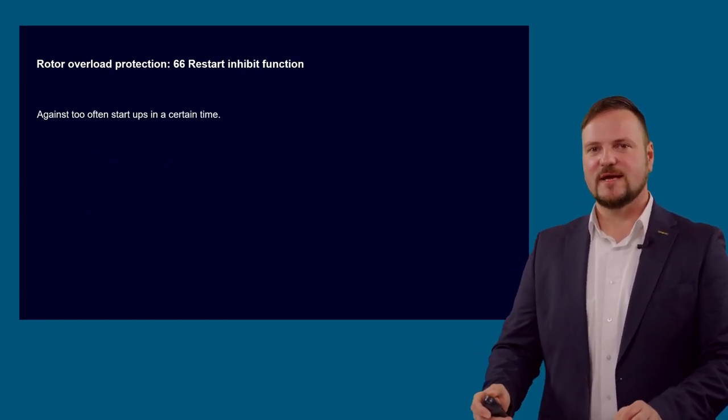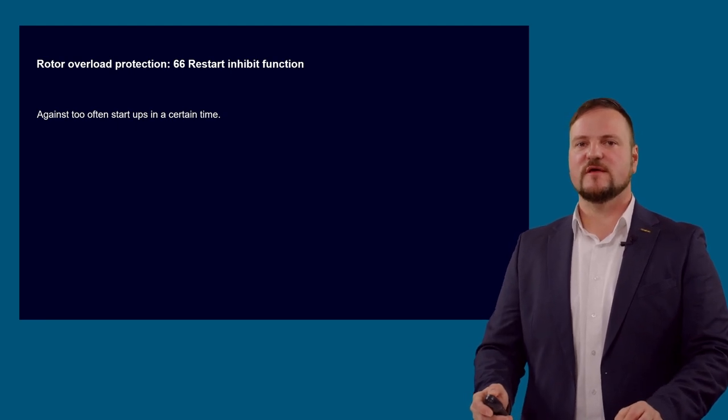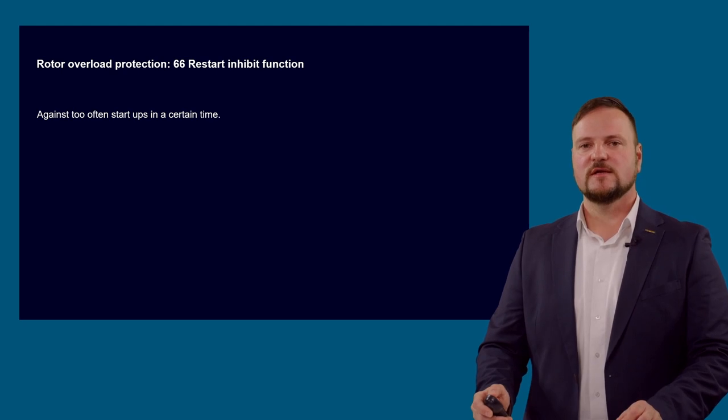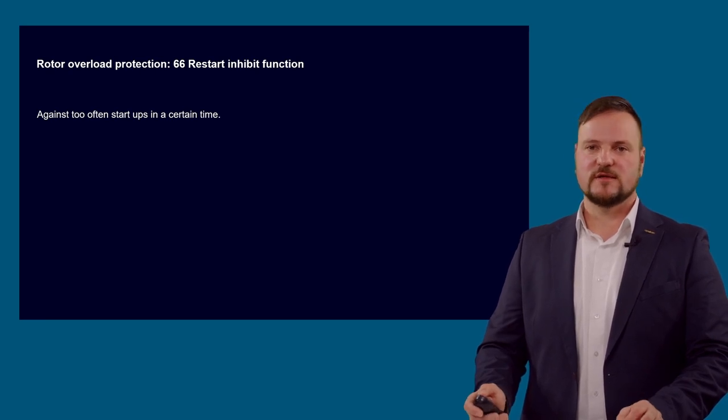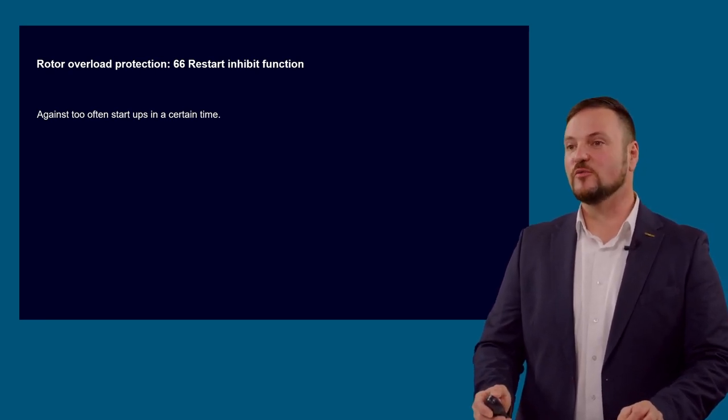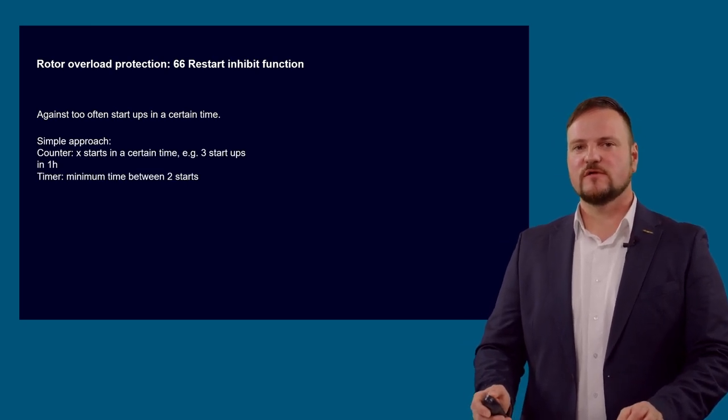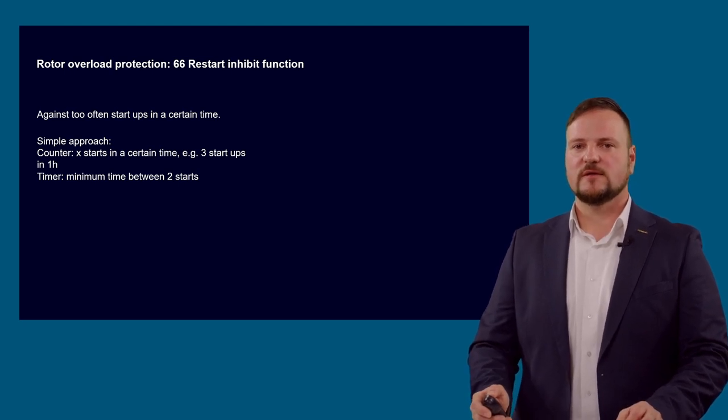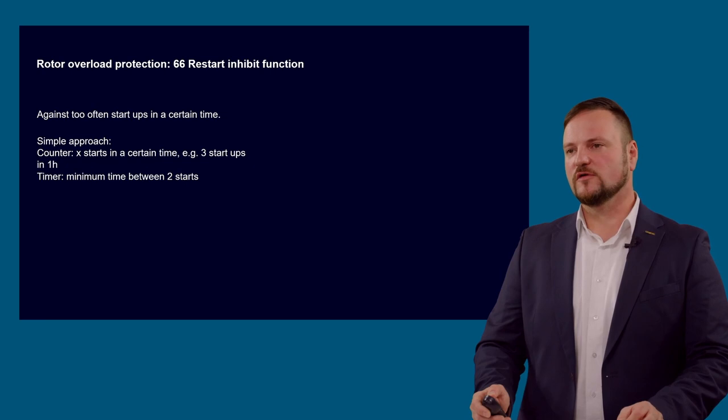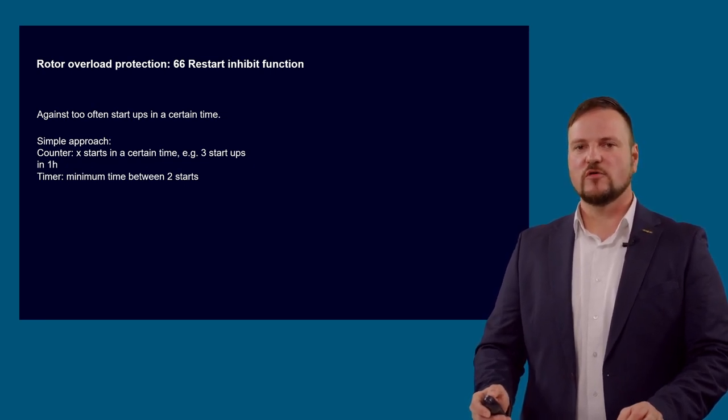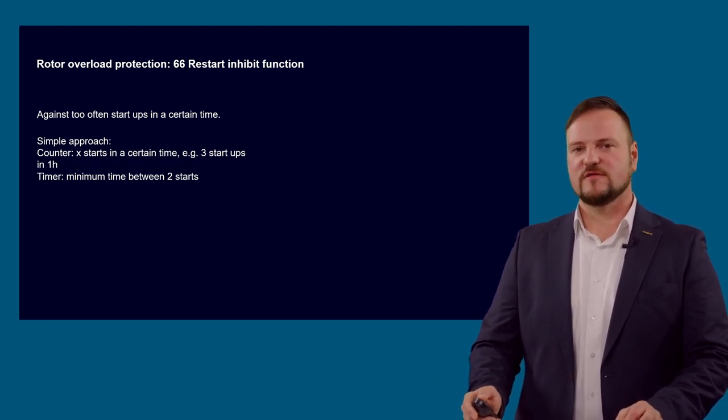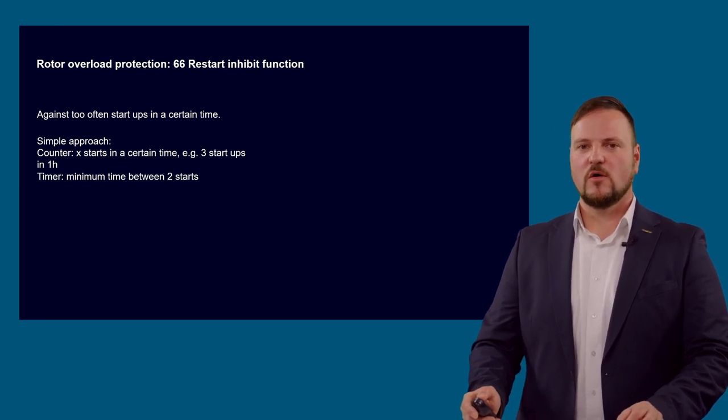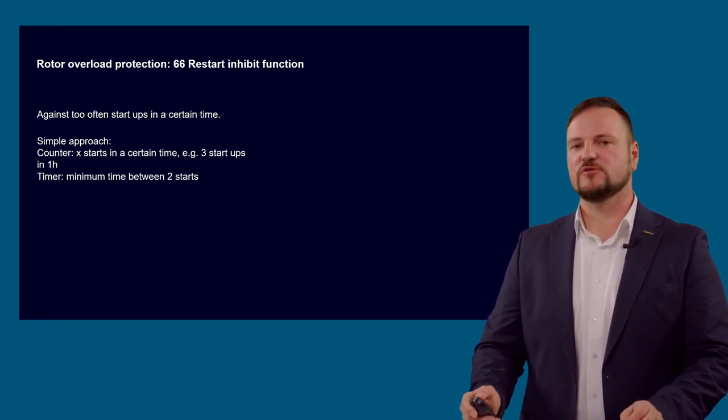The next slide is related to the restart inhibit function. The rotor is extremely sensitive during startup because the stator currents in this period are relatively high. Therefore, we have two protection functions, the restart inhibit function, and later discuss the starting time supervision. The restart inhibit function monitors that not too many starts happen in a certain time, so that the rotor has time for cooling down and is not overheated. In some cases, the given motor data describe a simple approach, like a certain number of starts in a certain time, for example three starts in one hour. Or a certain maximum time must be guaranteed between two ongoing starts.